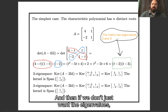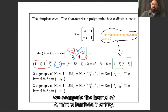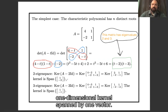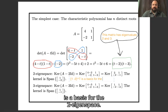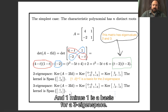So this computation shows us that this matrix has eigenvalues 2 and 3. If we also want the eigenvectors, for each of those two eigenvalues we compute the kernel of A minus lambda times the identity. Each of them has a one-dimensional kernel spanned by one vector. So 1, negative 2 is a basis for the 2-eigenspace, and 1, negative 1 is a basis for the 3-eigenspace.